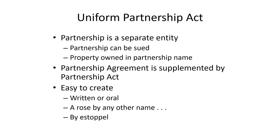It doesn't make any difference whether the partners call it a partnership or use some other name — a joint venture, joint enterprise, business agreement, sponsorship agreement, whatever else they call it. It still falls into the category of a partnership if there's more than one owner and they're engaged in business for the purpose of generating a profit. Partnerships can also be created by estoppel: if business owners have created separate businesses but hold themselves out to the public as one business, they create a partnership by estoppel.